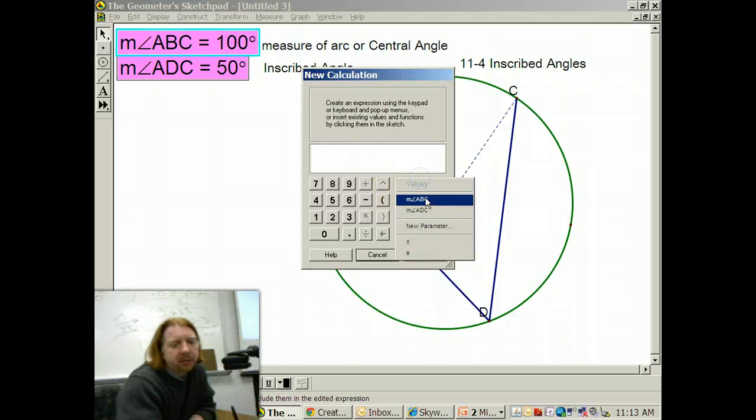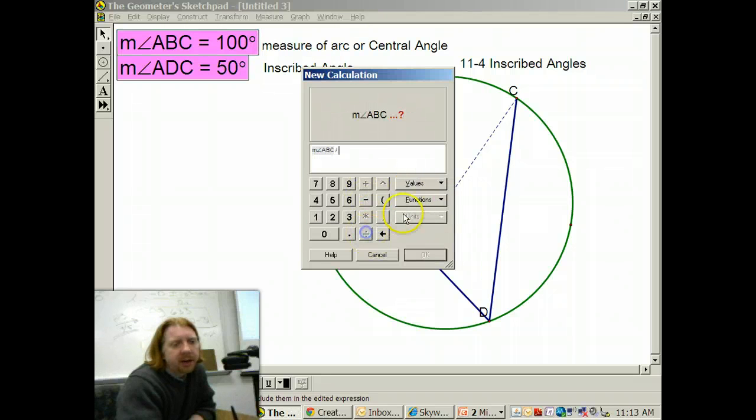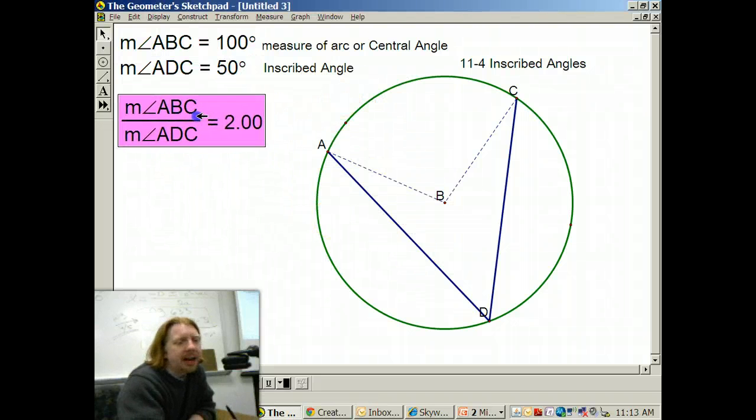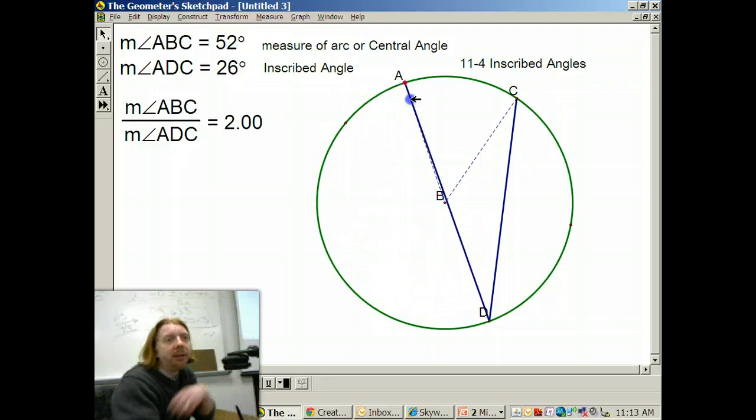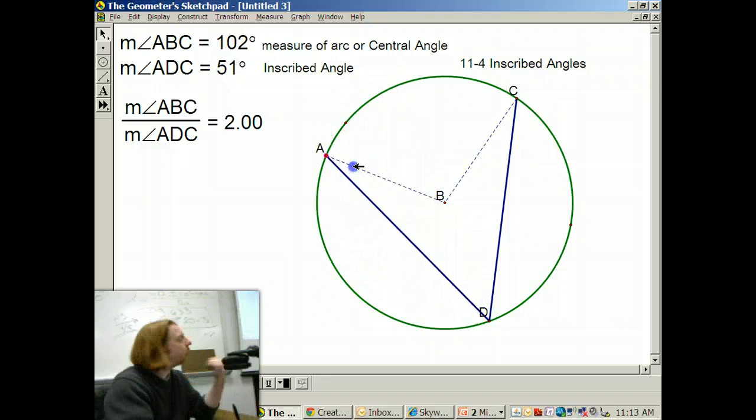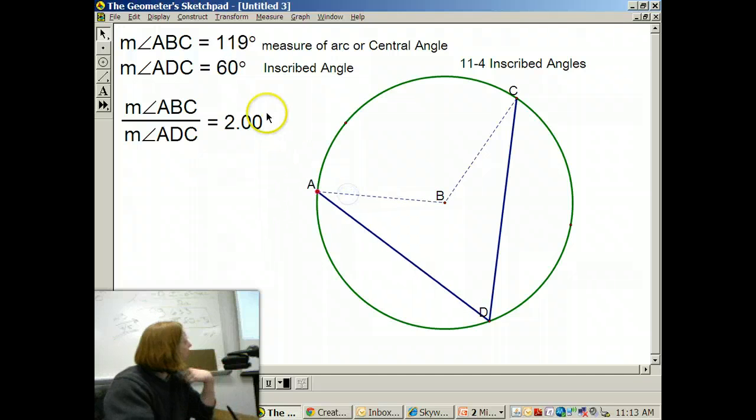If I take ABC and divide it by ADC, I always get a half. And that's true no matter how I change the central angle. The relationship is this. Inscribed angles are always half of the corresponding central angle.